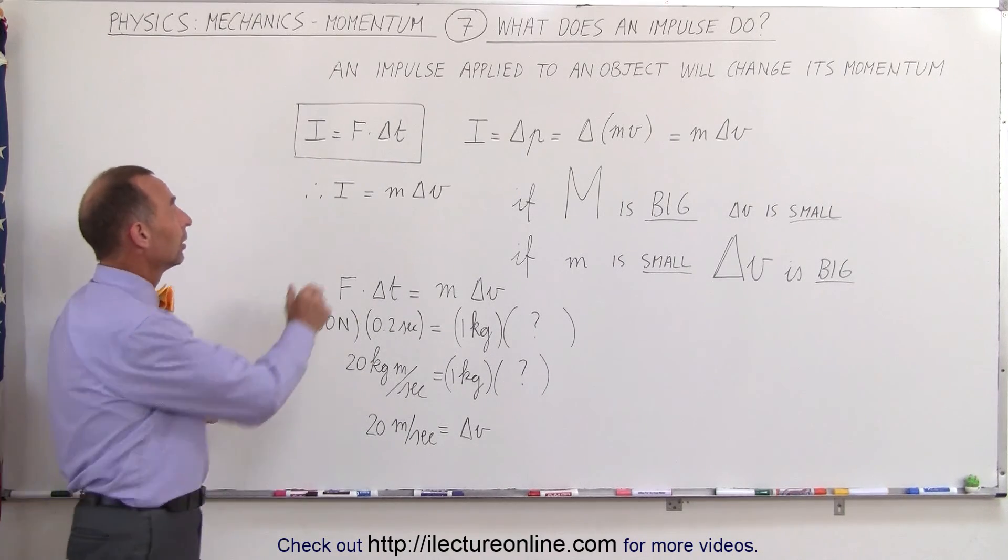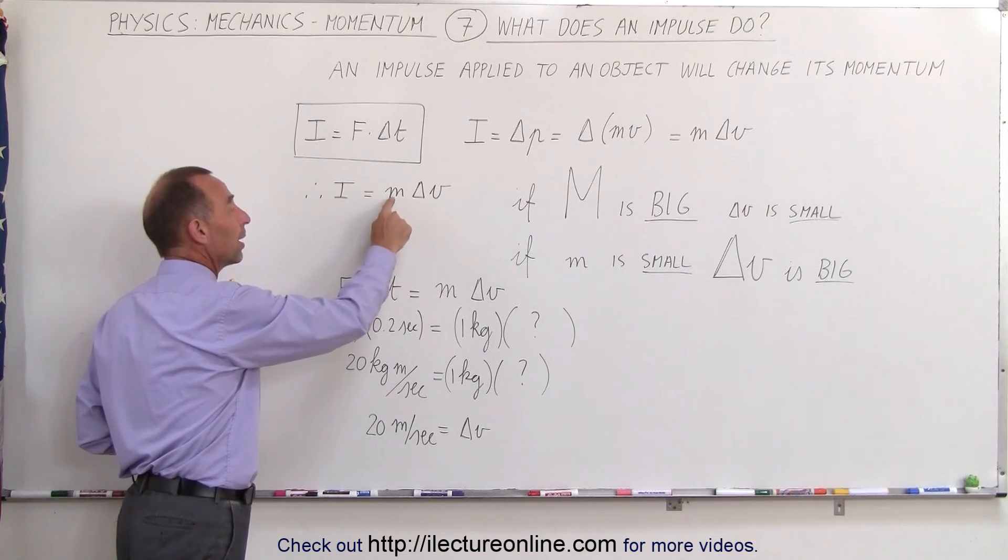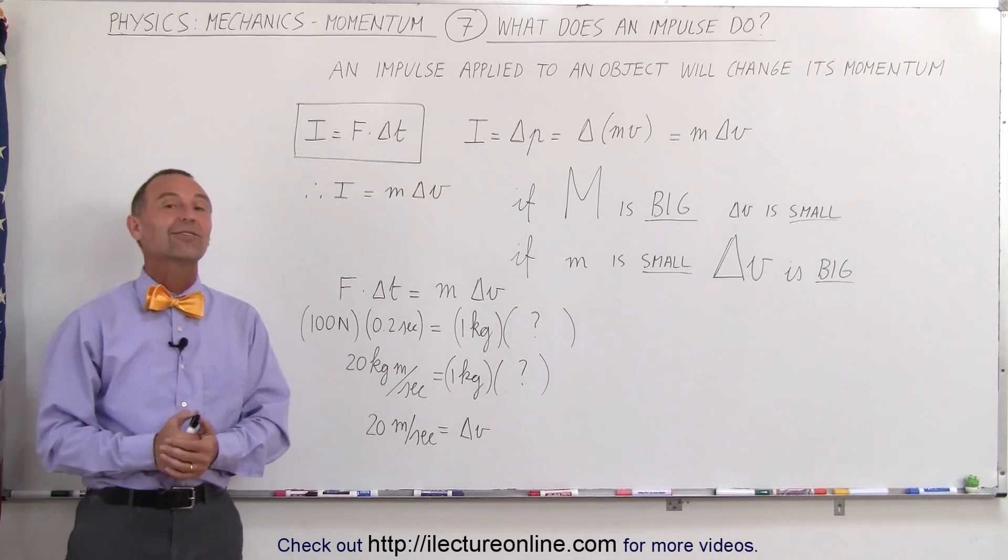We know that the impulse equals the change in momentum, which for a certain amount of mass will give us a certain change in the velocity, and that's how it's done.